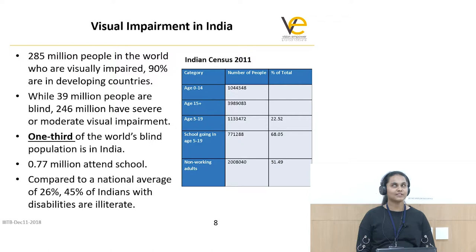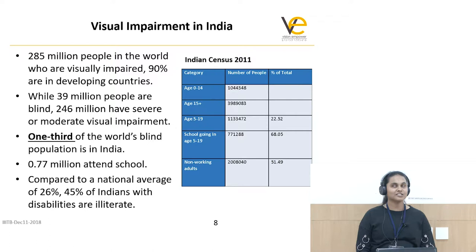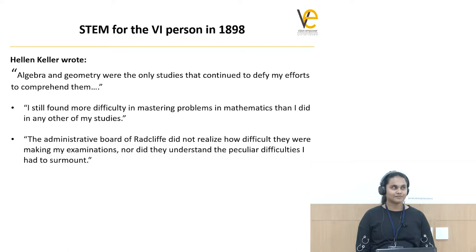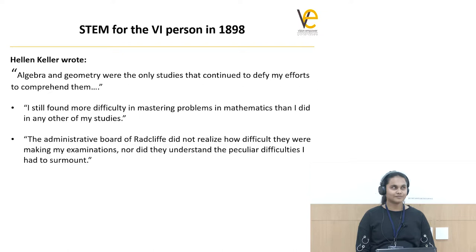Out of India's blind population, only 0.77 million — that's 7.7 lakh people — attend school. There are 11 lakh children in the age group 5 to 19, but only 68 percent attend school. When it comes to STEM education, there are less than 100 people who are visually impaired who have studied STEM-related courses at graduate and postgraduate level. Across all generations, just 100 students have taken science, technology, and related courses at that level. That is the magnitude of the problem in India.